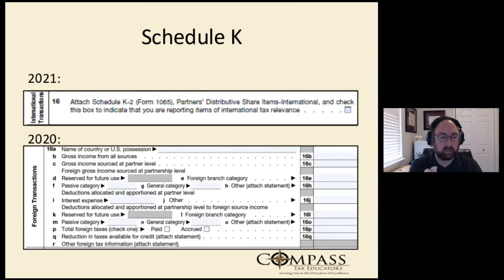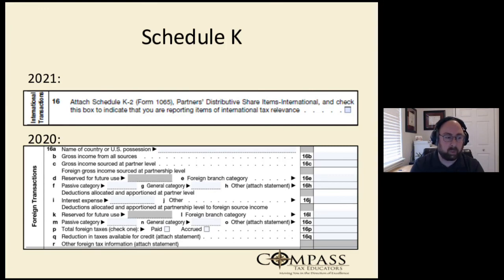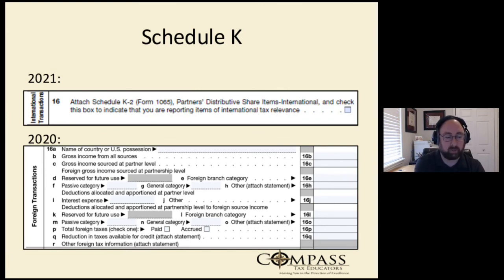So what happened between 2020 and 2021? On the Schedule K for 2020, we can see here we broke out several different items, going all the way through from 16a through r. What does the Schedule K look like now? It's a tick box — looks simpler, right? We'll break that down and show you how we went from those 20 or so lines out to the 19 pages and what that information looks like.